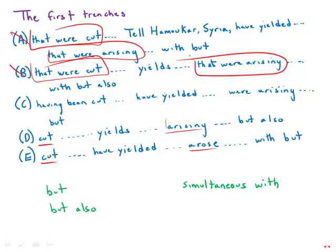Second thing that's going on is that the subject, of course, is plural, first trenches, but some of the verbs are singular, yields, so that's not correct. Have yielded is perfectly correct for that.